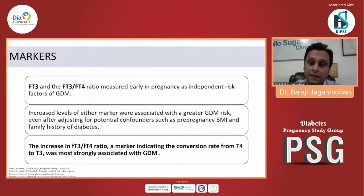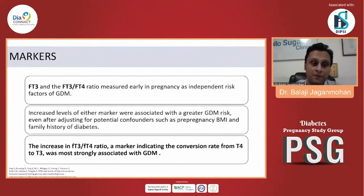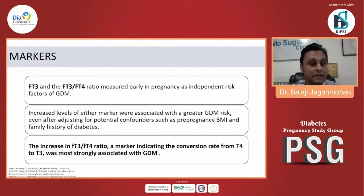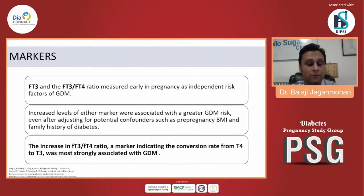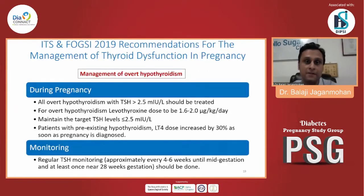There are certain markers which could be indicative of a potential risk of developing gestational diabetes if the woman already has hypothyroidism. Free T3 and the free T3 to T4 ratio, if measured early in pregnancy, can be an independent risk factor for developing gestational diabetes. An increase in either of these markers can increase the risk of gestational diabetes after adjusting for confounding factors like BMI or family history of diabetes. A higher conversion of T4 to T3 is a strong indicator of that woman developing gestational diabetes later in pregnancy.